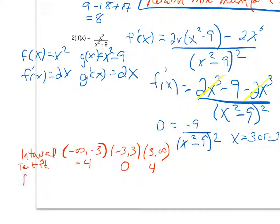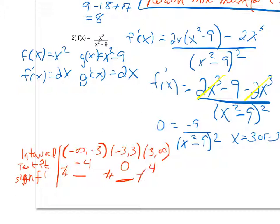Checking the sign of f prime at each test point: plugging in negative 4 gives a negative numerator over a positive denominator — negative. Plugging in 0 also gives a negative over a positive — negative. Plugging in 4 gives a negative over a positive — negative. The function is decreasing on all three intervals.